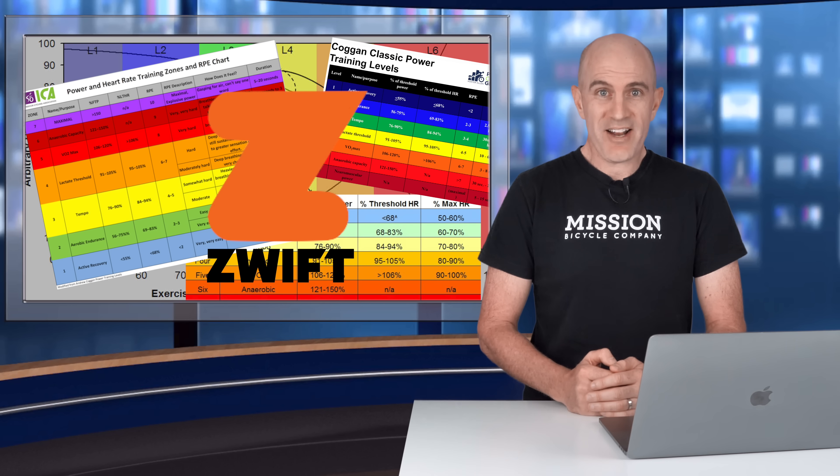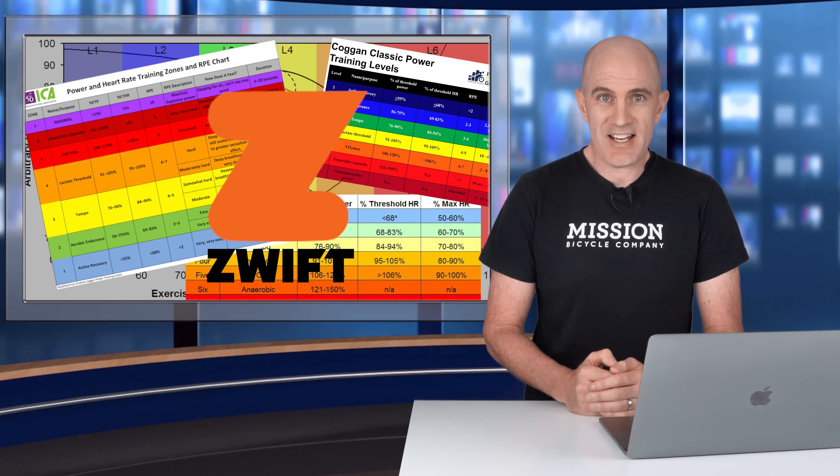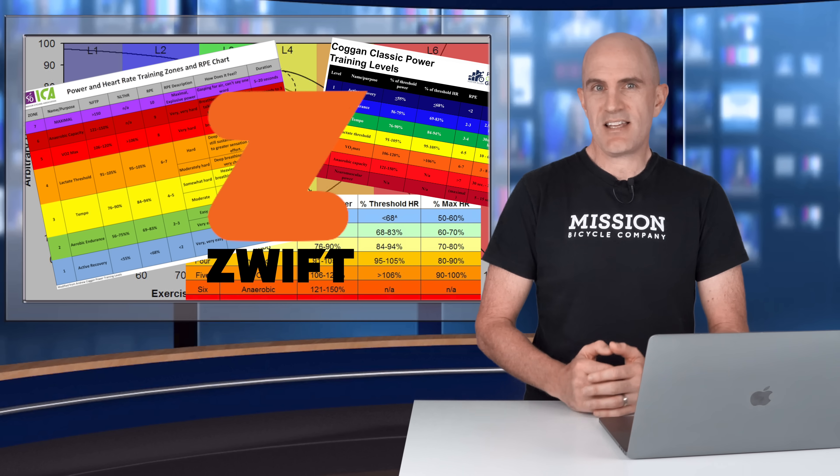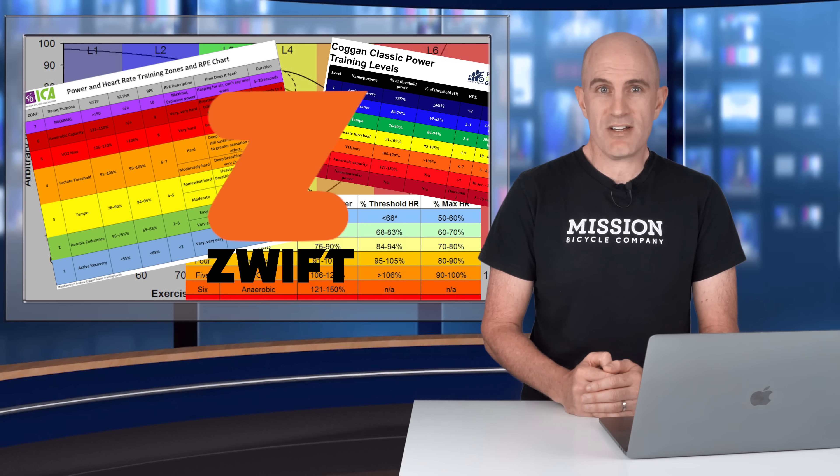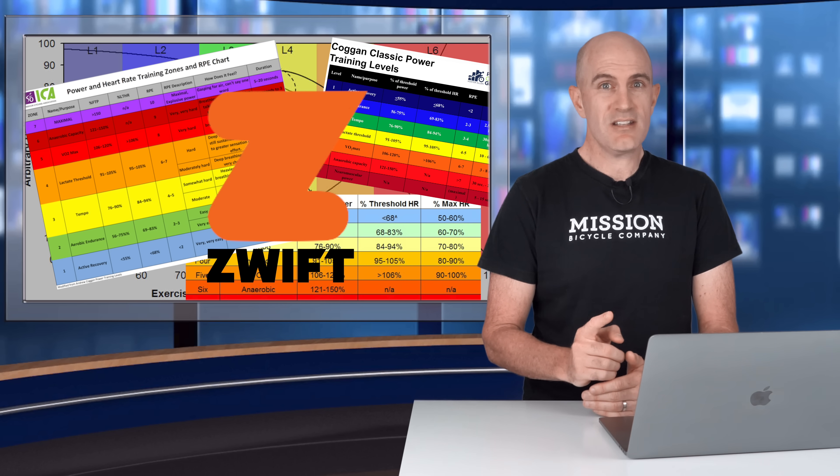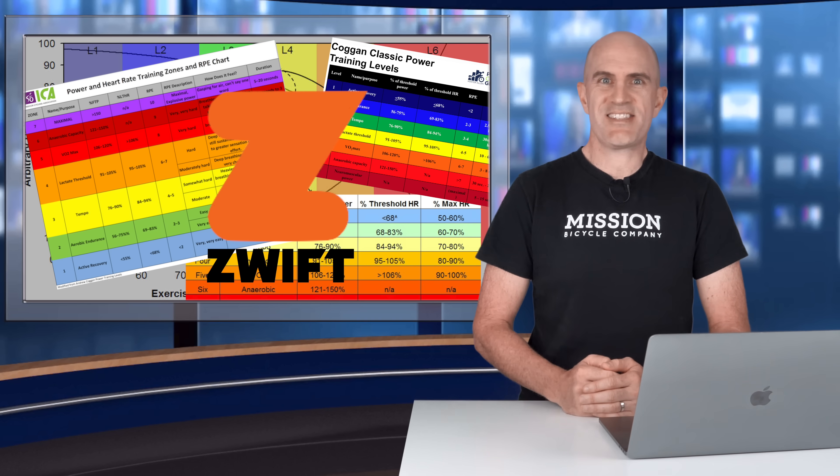What I found was quite interesting: the Zwift zones aren't exactly the same as the Coggan zones. They're close, but just not the same.